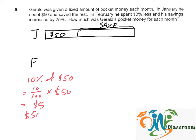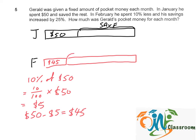So that means he spent a total of $45 in February. Let's draw the model — he spent $45 and he saved $5 more. This extra amount is $5.